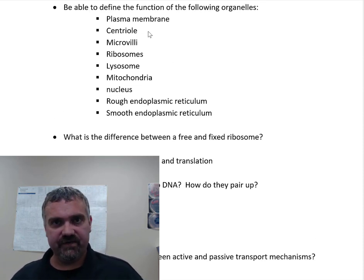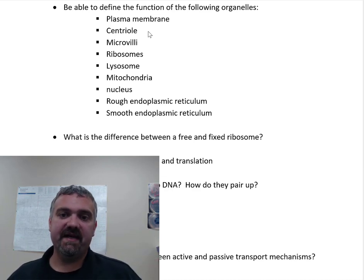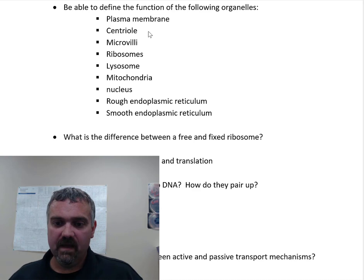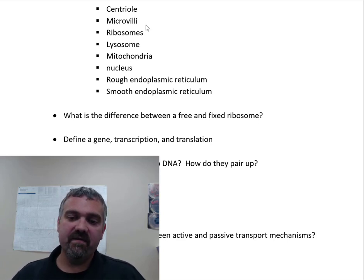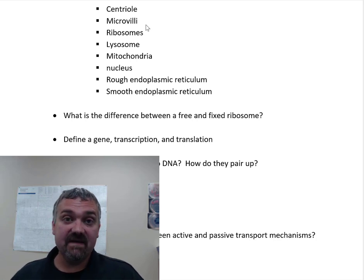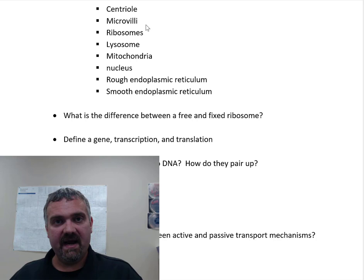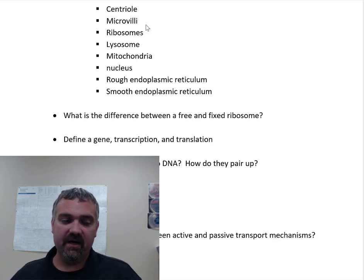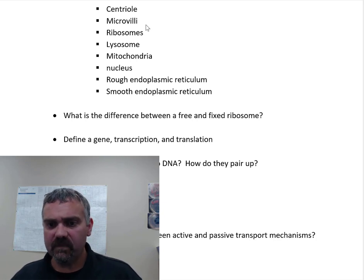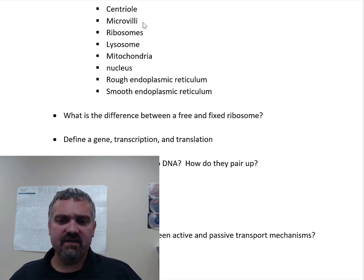Centrioles are only needed for mitosis — for cell division. They play a big role in grabbing DNA, lining it up, and pulling it into two piles during the cell cycle. Microvilli: on the surface of a cell, the two main things you'd see are microvilli or cilia. Microvilli are shorter; their job is to increase surface area. If you see a cell with microvilli on its surface, like in your small intestine, it means it needs a massive surface area for absorbing or secreting things. Cilia in human cells move material over cell surfaces rather than moving the cell itself.